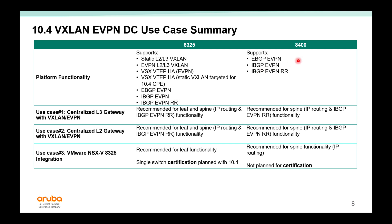The H325 can also function as a route reflector. The AD400 supports only the EVPN control plane — it can support both EBGP EVPN or IBGP EVPN — and the target is to use it as a route reflector when it's a spine. H325 is recommended for both leaf and spine, for both centralized layer 3 and layer 2 gateways. AD400 is recommended as spine. For the third use case, H325 is planned for NSX-V certification, and we will start certifying it with VMware in 10.4. Because AD400 does not support VXLAN, it's not planned for certification.